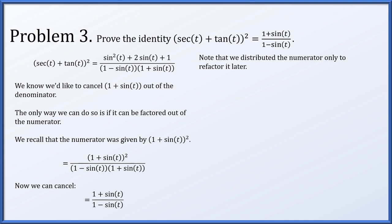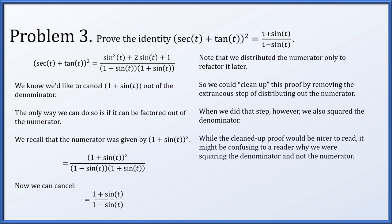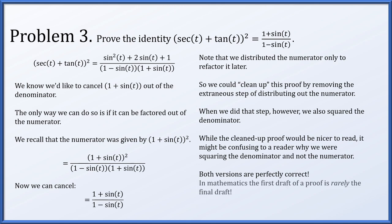Observe that we distributed the numerator (1 plus sine t) squared and then later refactored it, so you could clean up your proof by not bothering to distribute that numerator in the first place. However, when we distributed the square in the numerator we also did it in the denominator, and that was important. A cleaned-up proof skips an unnecessary step, but a reader might wonder why the denominator was squared and not the numerator. Both versions are totally correct — unnecessary steps are not incorrect in a proof as long as they're valid. Generally, the first way you figure something out is rarely the final version; you can clean it up by removing unnecessary steps later.